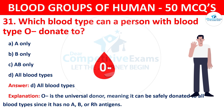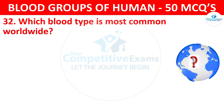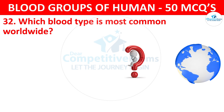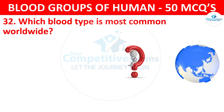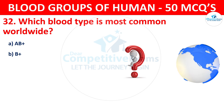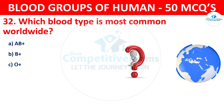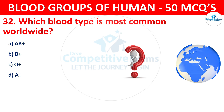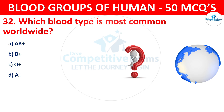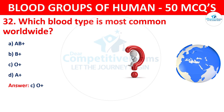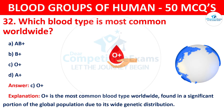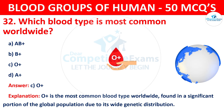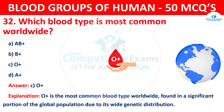Question 32: Which blood type is most common worldwide? The correct answer is C, O positive. O positive is the most common blood type worldwide, found in a significant portion of the global population due to its wide genetic distribution.